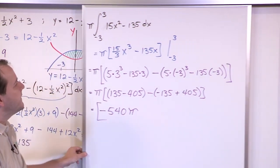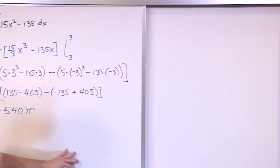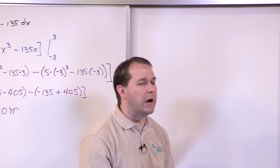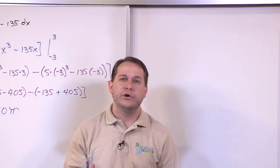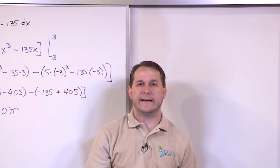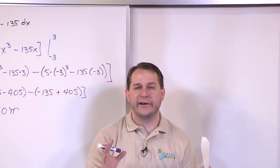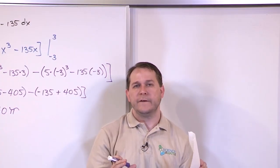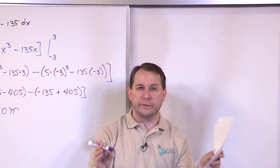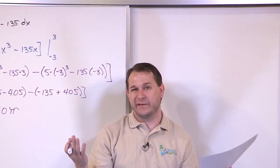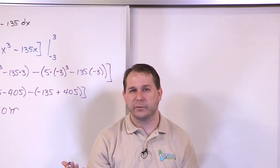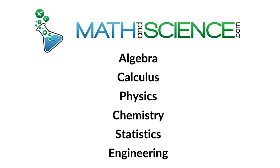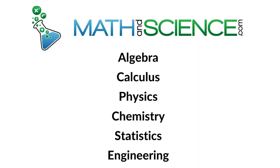That is an example of how you do the washer method when two functions are revolved around the x-axis and they intersect, forming a closed region. The key takeaway: you can use the washer method for enclosed objects — just find the intersection points to get your limits of integration.